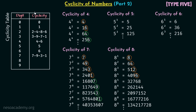So the cyclicity of digit 8 is 8, 4, 2, 6. Moving further we will again have 8, 4, 2, 6, confirming that the cyclicity of digit 8 is 8, 4, 2, 6.